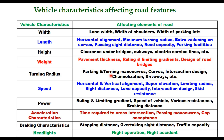This table shows how vehicle characteristics affect design elements of a road. Width of the vehicle will affect lane width, width of shoulders, and width of parking loads. Length will decide horizontal alignment, minimum turning radius, extra widening on horizontal curves, passing sight distance, road capacity, and parking facilities. Height will decide the clearance under bridges, subways, and electric service lines. Weight of the vehicle is important to design pavement thickness, rolling and limiting gradients, and is also used to design road bridges. Turning radius is important for parking and turning maneuvers, design of curves, design of intersections, channelization, and driveways.